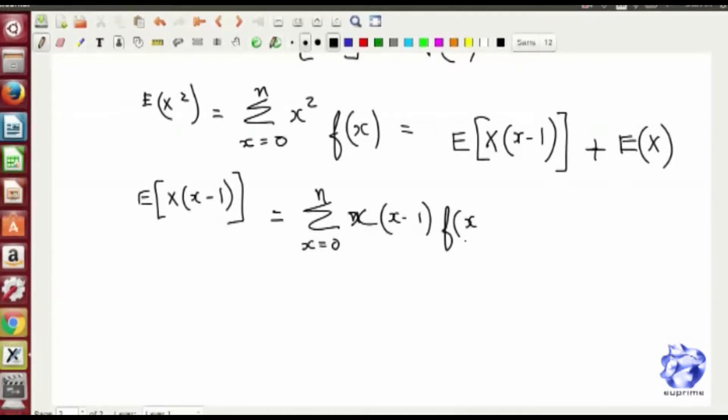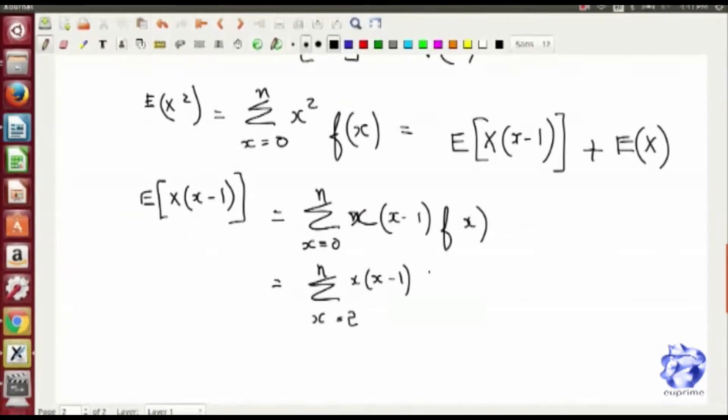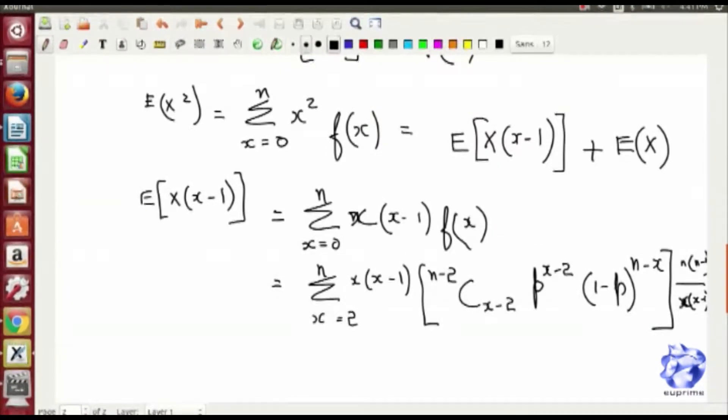Now you want to find out the variance term, for which you require expected value of X squared. Again we do the same thing: you sum it up from 0 to n, multiply with x squared. The x squared can be written as expected value of X times (X minus 1) plus expected value of X.